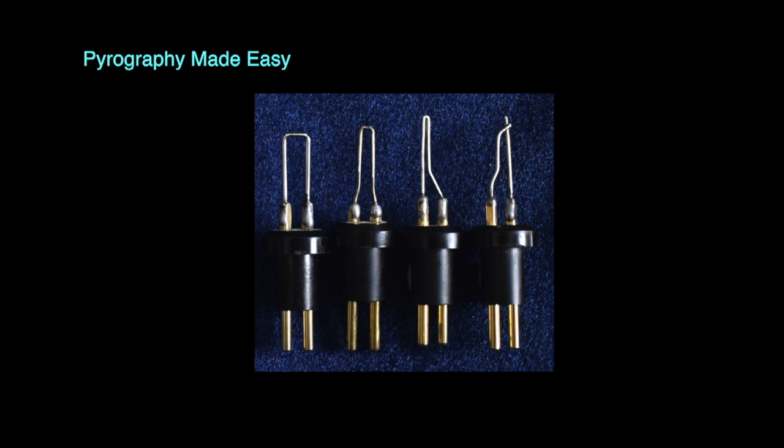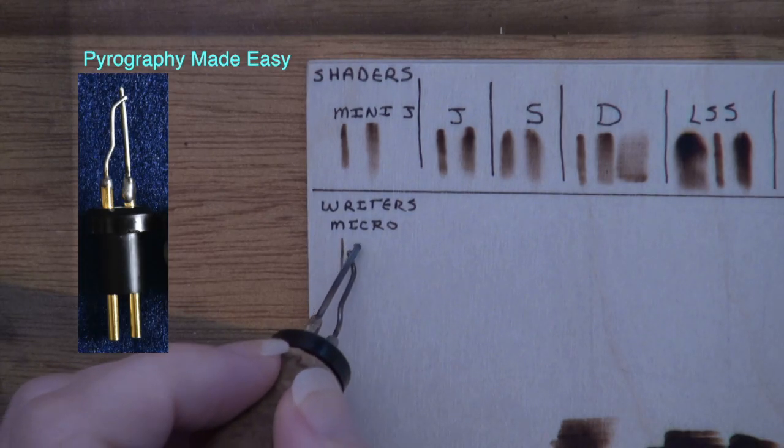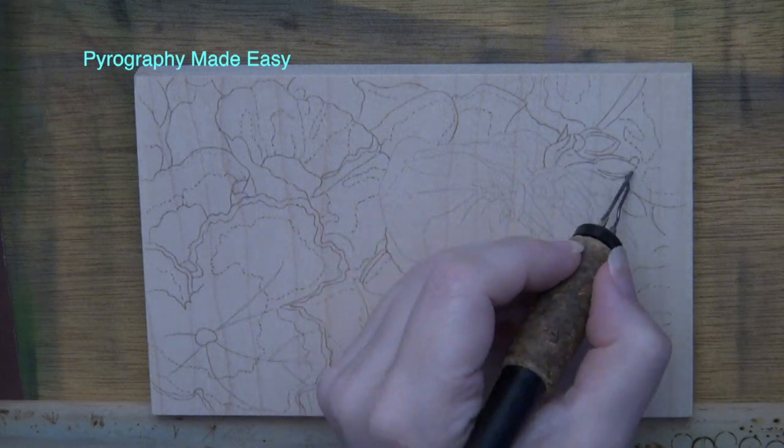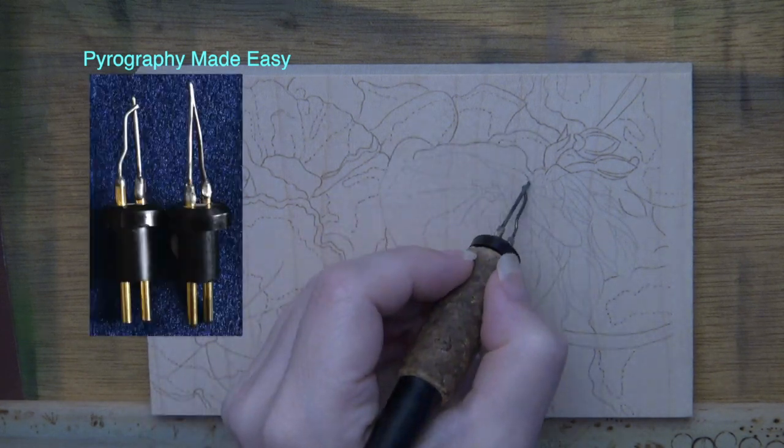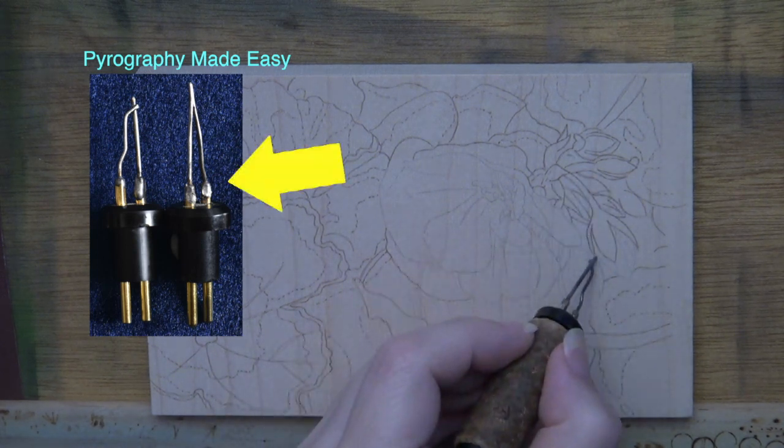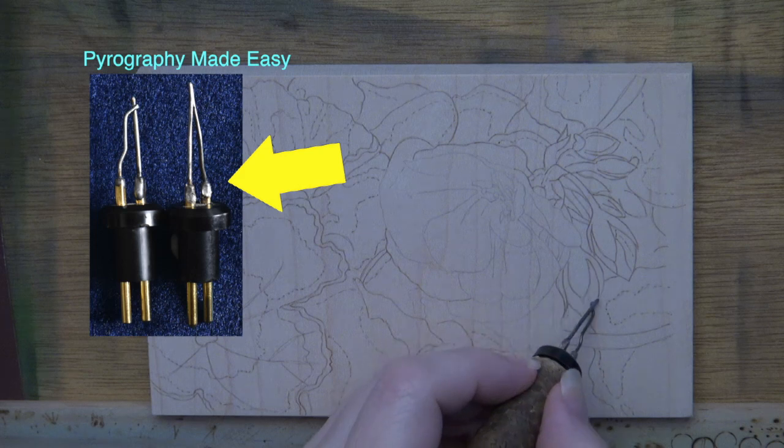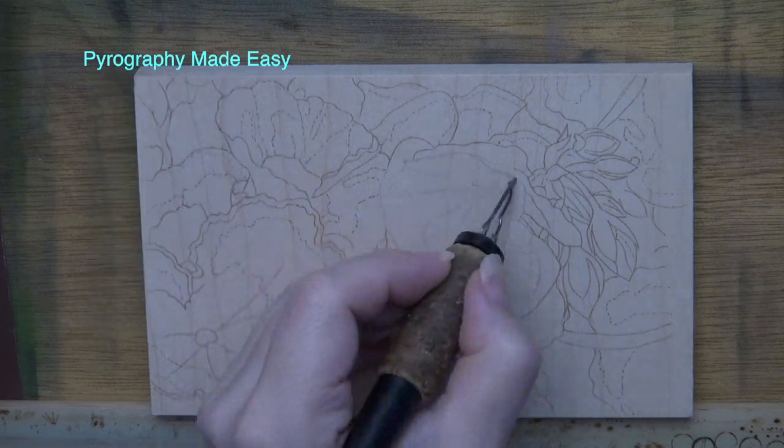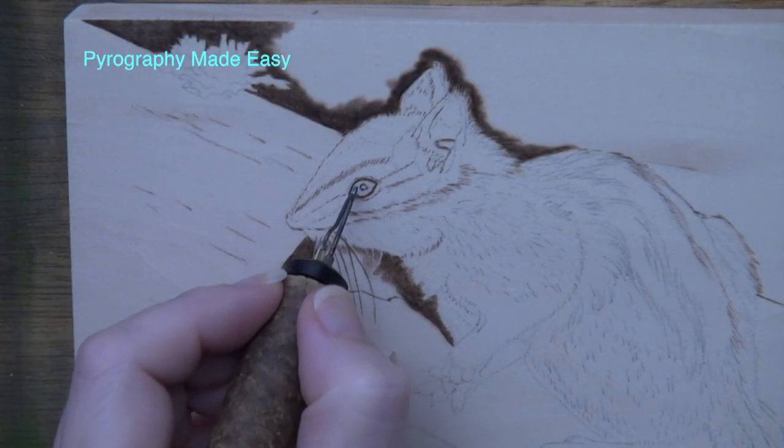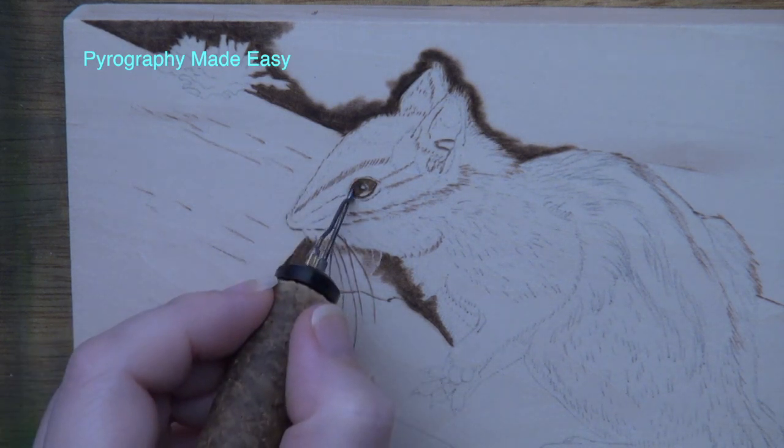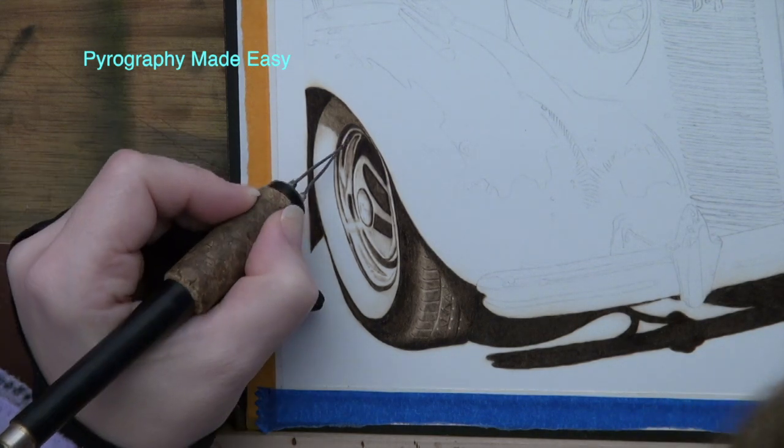Writer pen tips. Let's talk about writer pen tips. This is a micro writer pen tip. The main thing that I use it for is burning in trace lines. Now the inset photo shows two micro writer pen tips. The one on the right is the old version that Colwood used to make and you will probably see it in some of my videos. I also use the micro writer to burn in areas that are just too small for any of the shaders, like the eye on this chipmunk or the reflection on this hubcap.